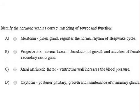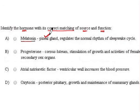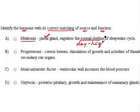Here we have to find the correct match of the hormone with its source and functions. The first hormone is melatonin, which is secreted by the pineal gland — which is the correct source. The function states it regulates the normal rhythm of the sleep-wake cycle; this hormone is responsible for the day-night cycle, that is the circadian rhythm.